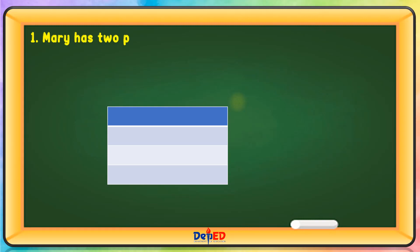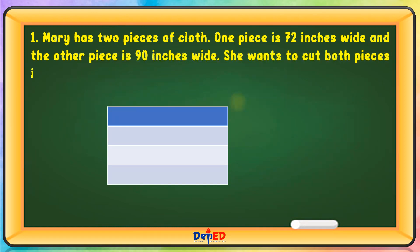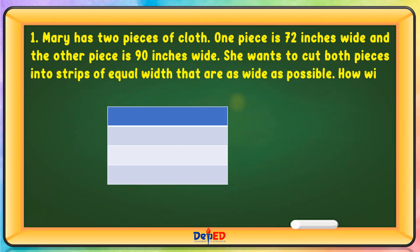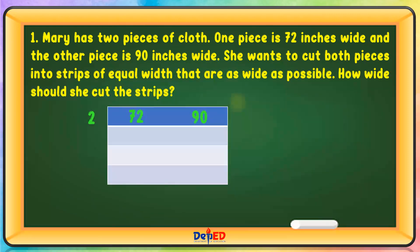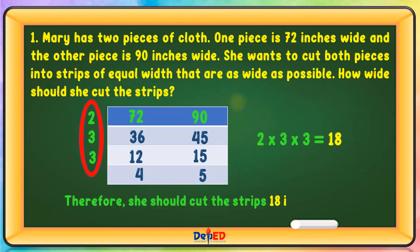Mary has 2 pieces of cloth. One piece is 72 inches wide and the other piece is 90 inches wide. She wants to cut both pieces into strips of equal width that are as wide as possible. How wide should she cut the strips? 72 and 90 are divisible by 2: 72 divided by 2 is 36; 90 divided by 2 is 45. 36 and 45 are divisible by 3: 36 divided by 3 is 12; 45 divided by 3 is 15. 12 and 15 are also divisible by 3: 12 divided by 3 is 4; 15 divided by 3 is 5. 2 times 3 times 3 equals 18. Therefore, she should cut the strips 18 inches wide.